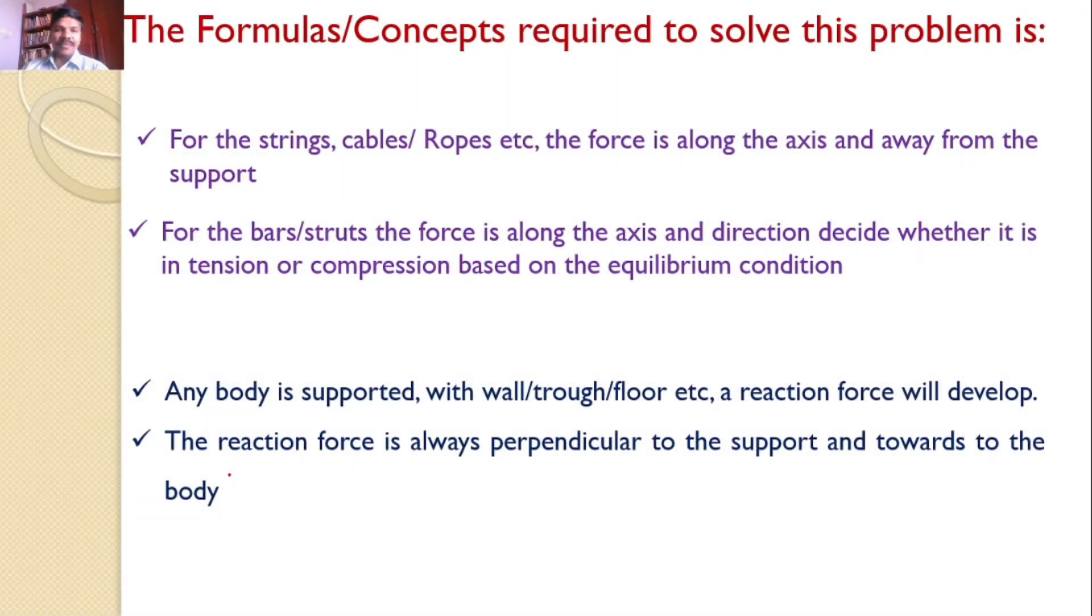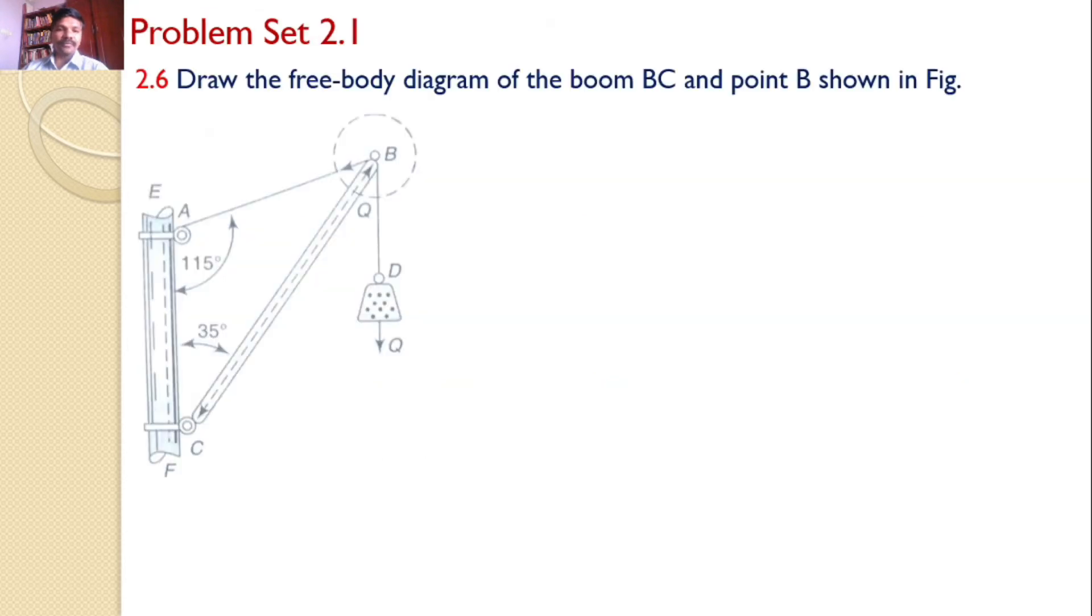Okay, so with this concept, let us go to the solution of our problem. We are interested to draw the free body diagram of BC and also the free body diagram at B. Now let us discuss one by one. Let us consider the string AB. The force in the string AB is along AB and it is away from the support. That means if you look at point B, B is the support and the force is away from point B, and this magnitude is S1. Similarly, if you look at the same string AB from point A, then the force is along the string AB and it is away from A, that is S1.